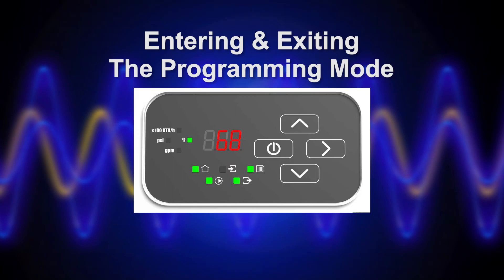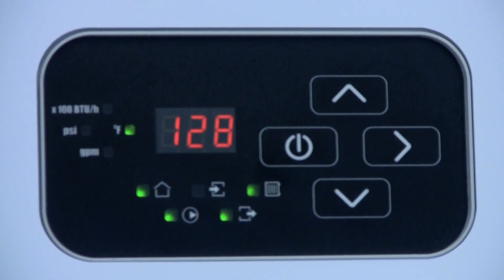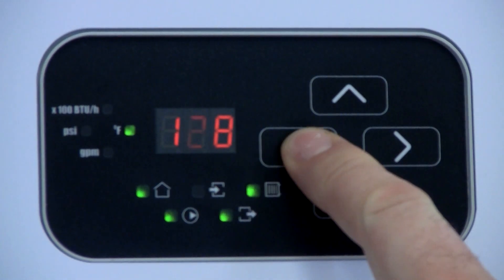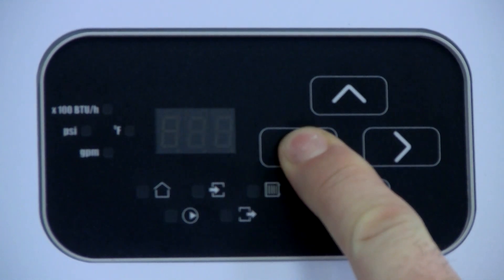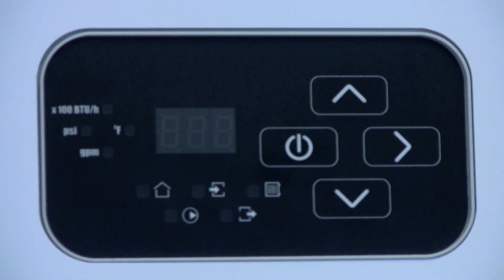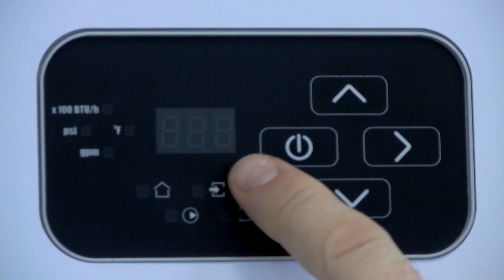Entering and Exiting the Program Mode. To enter the programming level, you must first put the boiler into standby. This is done by pushing and holding the standby button until the display goes blank. You will know that you have correctly entered the standby mode because the display will be blank with the exception of a flashing red dot on the bottom right-hand corner.